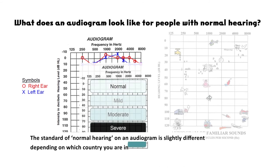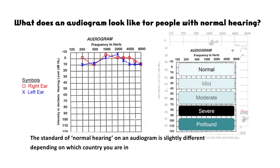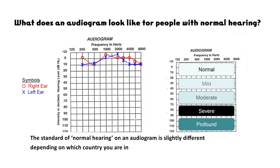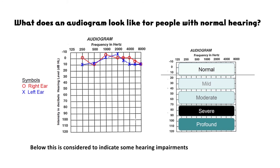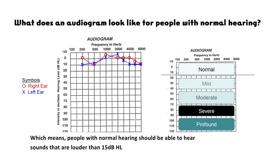The standard of normal hearing on an audiogram is slightly different depending on which country you are in. In Australia, we draw a line at 15 dB. Any results above it is within the normal range. Below this is considered to indicate some hearing impairment, which means people with normal hearing should be able to hear sounds that are louder than 15 dB hearing level.